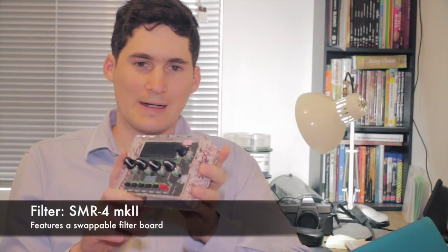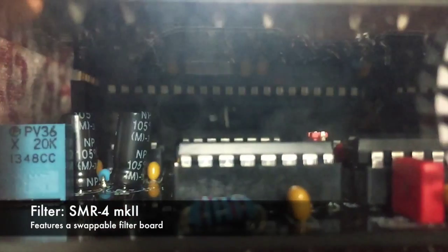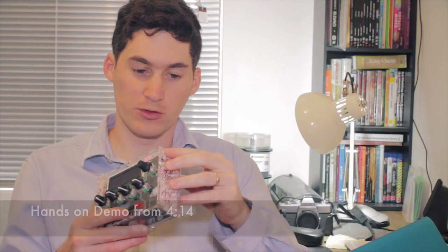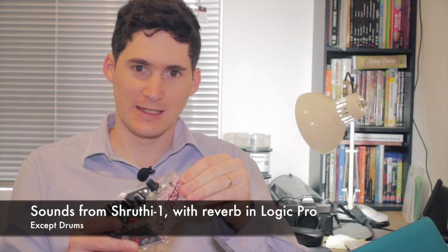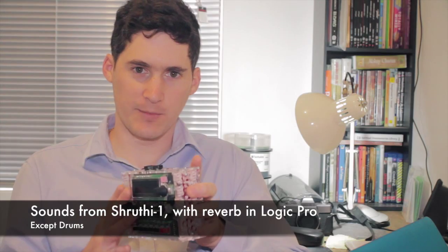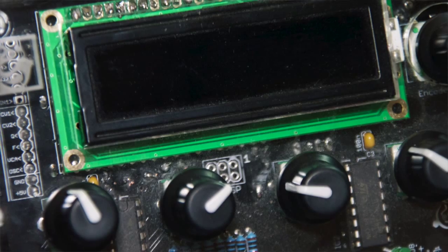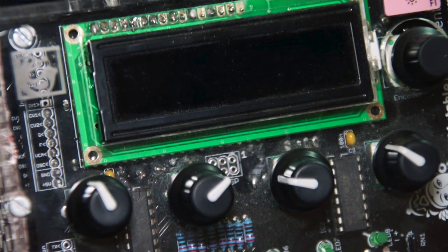The Mutable Instruments Shruti-1 is a hybrid analog-digital mono synth. The mono synth can only play one note at a time; it does not play chords. Mutable Instruments is a boutique synthesizer company. They make specialized DIY kits and they've recently branched out into modular instruments.